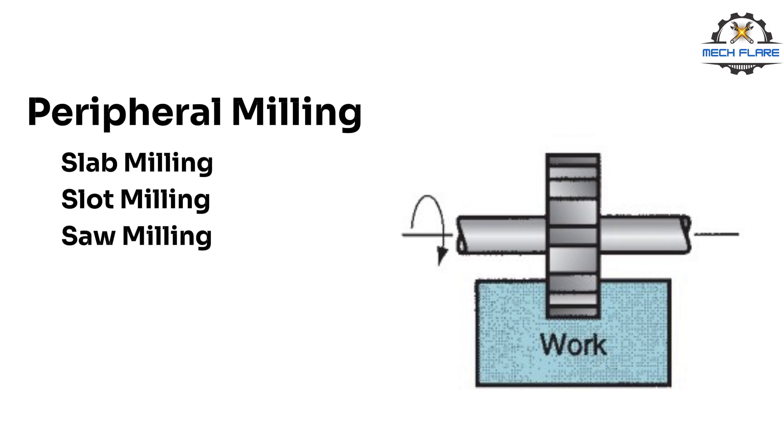Saw milling is basically slot milling, but the cutter is very thin, and this operation can be used to mill narrow slots or cut a work part in two.